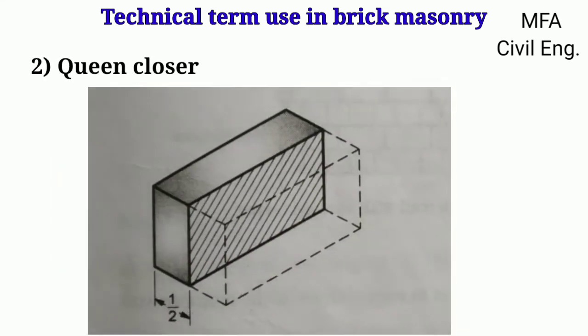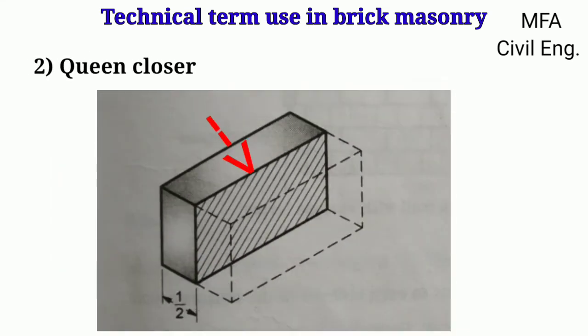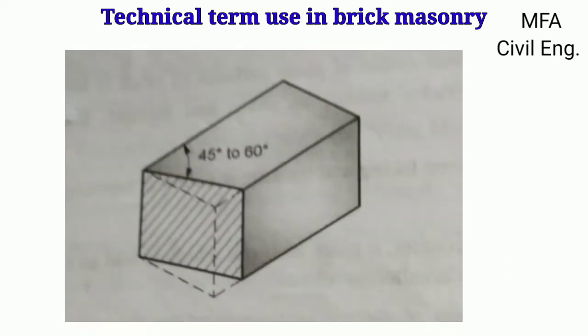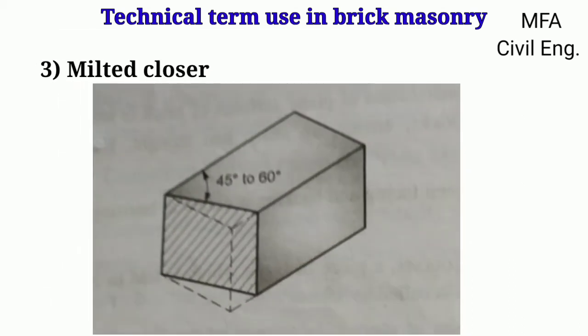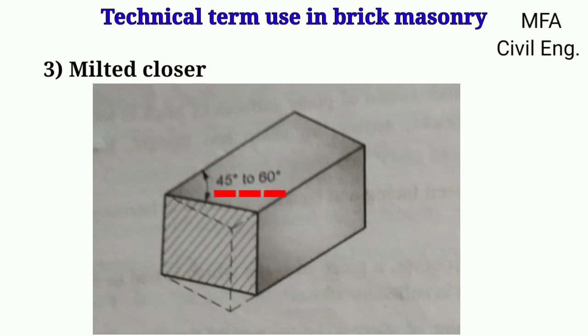Queen closure is obtained by cutting a brick lengthwise into two pieces. It is used along the length of the quoin for staggering joints of alternate courses. When a triangular portion of a brick is cut through its width at an angle of 45 to 60 degrees with the length of the brick, the remaining portion after cutting is called the mitered closure.